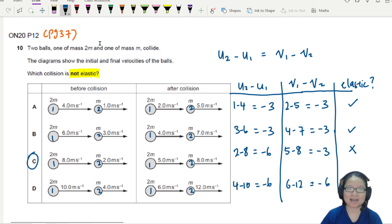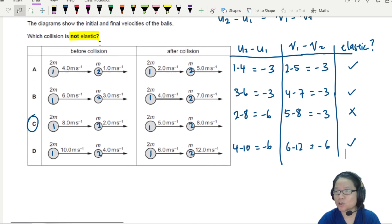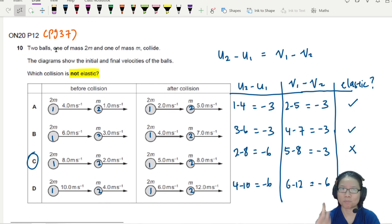So in a nutshell, if you can build up a table and then you can compare the relative velocities, it's very quick. You can tell which one is elastic and which is not elastic. All right, that's it for this question. I'll see you in the next example video.